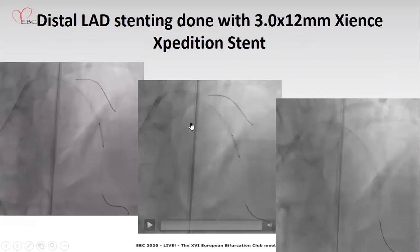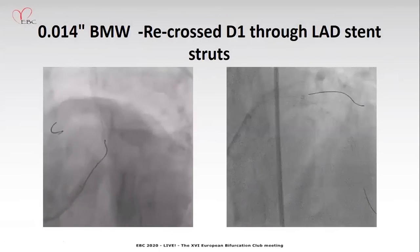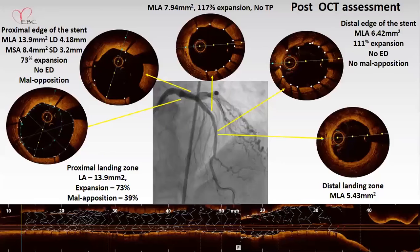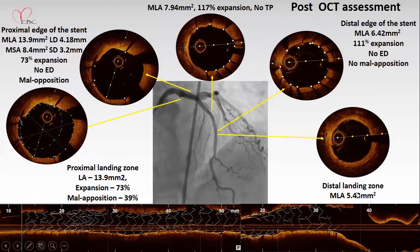The distal LAD stent was covered with a 3 × 12 mm stent. We recrossed the BMW wire into D1 to assess stent struts across the side branch ostium and evaluate apposition and expansion. Distally, there was no edge dissection and expansion exceeded 100% — distal MLA 6.42 square mm versus reference MLA 5.43 square mm. However, proximally, there was a significant amount of malapposition with an underexpanded stent; vessel diameter was 4.2 square mm, requiring a larger balloon.